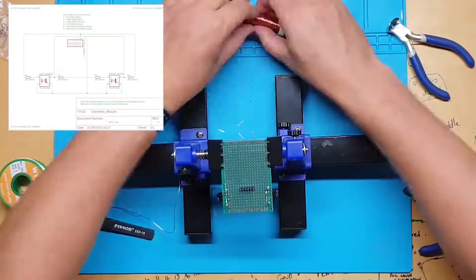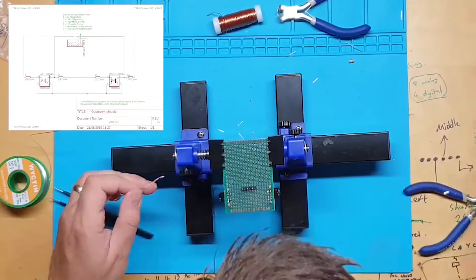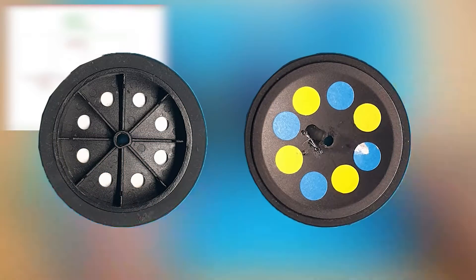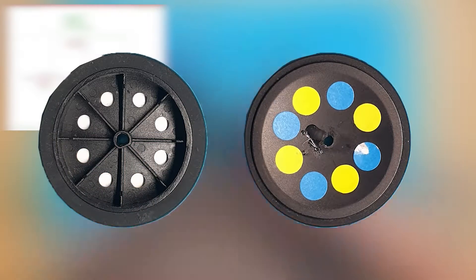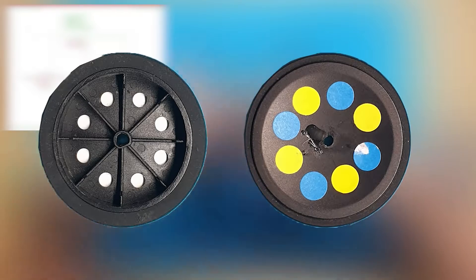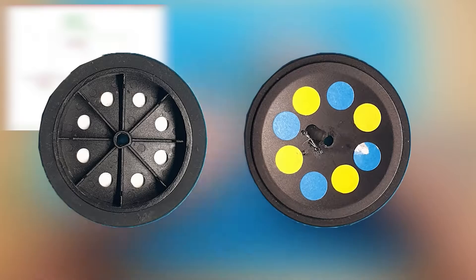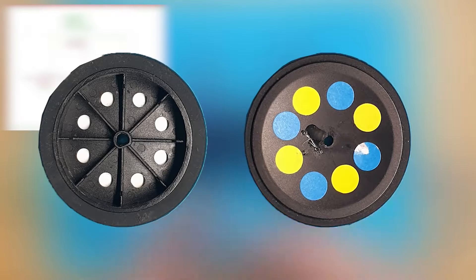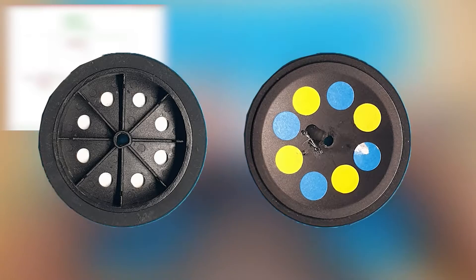While the interconnections are being done, I will show you what the wheels will look like with the stickers on. These are the wheels, as you can see the inside of the sticker is white giving us a lot of reflected infrared. The black part of the wheel will give us no reflected infrared. The change in reflected infrared is what we will measure to calculate wheel rotation.